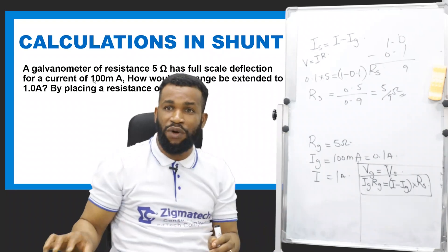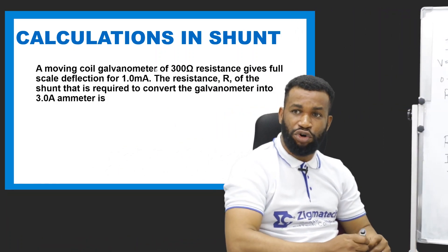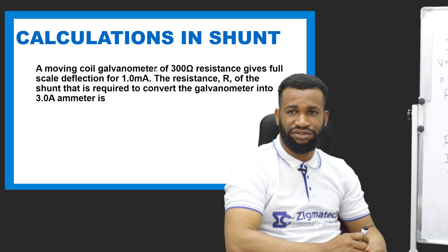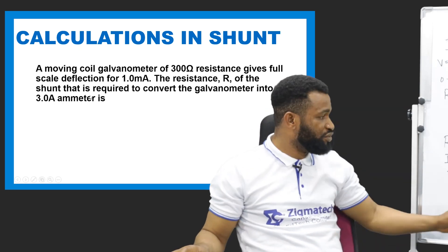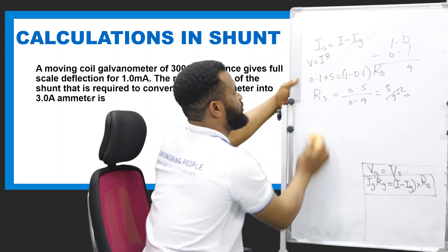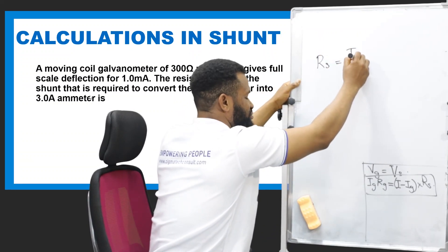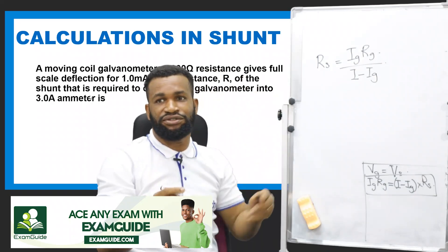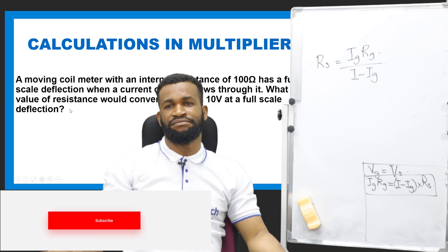We have another one. A moving coil galvanometer of 300 ohms resistance gives full-scale deflection for 1 milliampere. Find the resistance R of the shunt required to convert the galvanometer into a 3 ampere ammeter. This question is similar to what I have given. Using the formula: resistance of the shunt equals current of the galvanometer times resistance of the galvanometer, all over current minus current of the galvanometer.